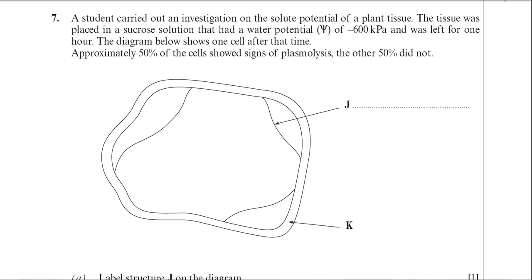This is the June 2011 BY-1 paper. We're looking at question number seven, which is on osmosis in plants. It's quite a short question — there's only three parts to it, and it's worth a total of seven marks. The critical part about this question is that you have to understand a certain concept in osmosis in plants. Without that, you will definitely lose at least three marks in this question, which is just too much to lose in an exam.